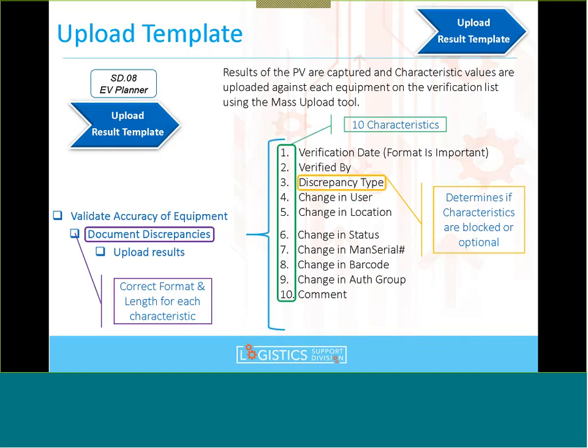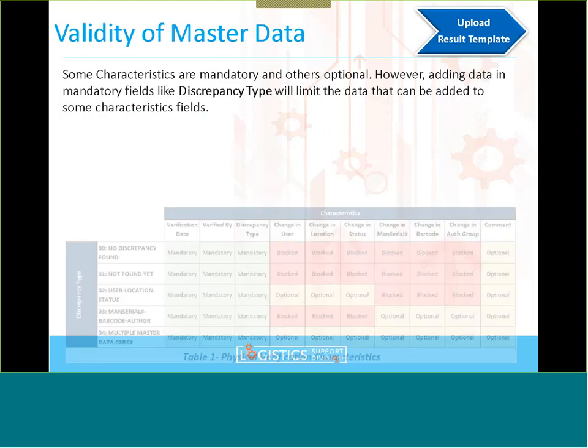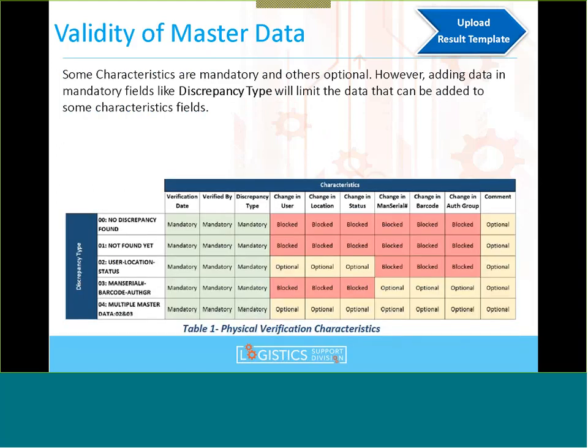I'll move to the next slide and then cross-reference what's shown on the PowerPoint with the actual Excel physical verification template. There's a question from Iqqhan asking what is meant by 'length of each characteristic.' We're going to see that in the next slide — it refers to the number of characters the physical verification template allows you to write in the actual Excel field.